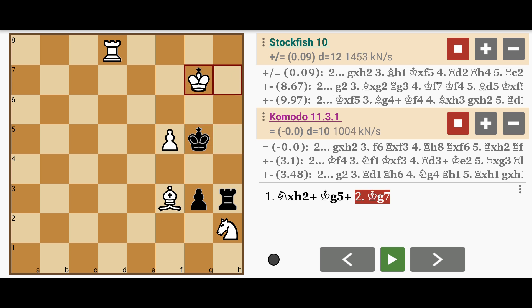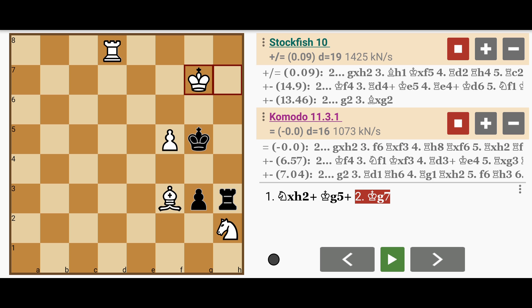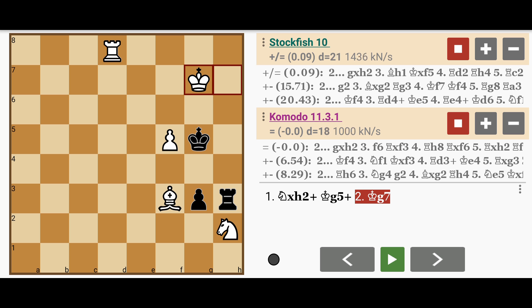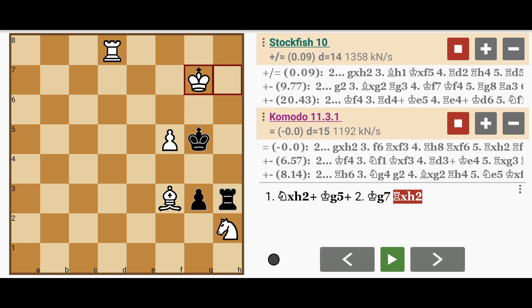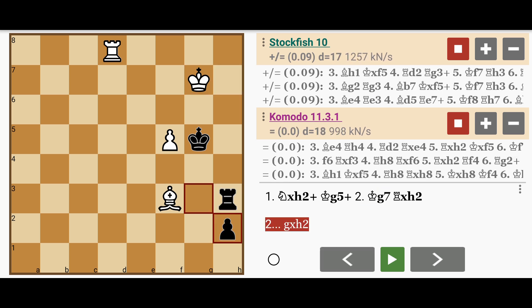After the king moves, for example to g7, black also must be careful to capture with the pawn and not the rook. Capturing with the rook also loses eventually, but capturing with the pawn threatens a promotion.